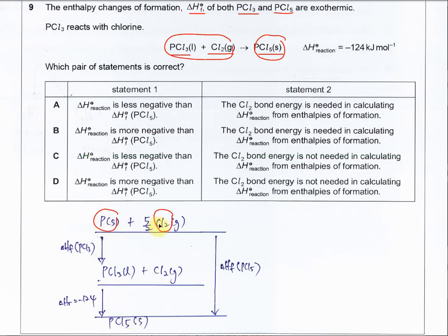The P and the CL2, they can react and form PCL3. So therefore, this is Delta HF for PCL3.